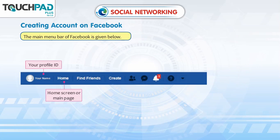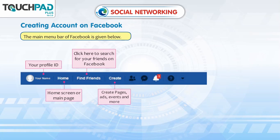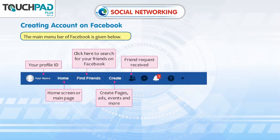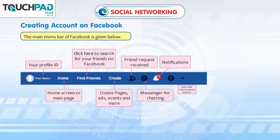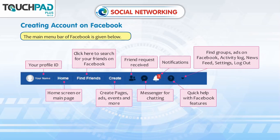The Facebook menu bar includes: your profile ID; home screen or main page; a search bar to find your friends on Facebook; Create — to create pages, ads, events and more; friend requests received; Messenger for chatting; notifications; quick help with Facebook features; find groups; ads on Facebook; activity log; news feed; settings; and logout.